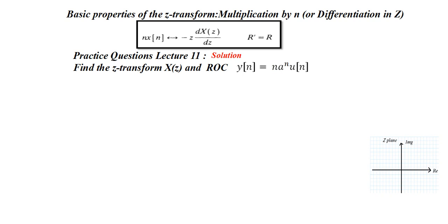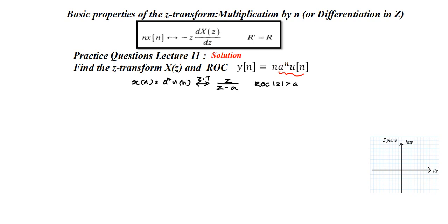The first question: y(n) = n · aⁿ · u(n). We can approach this by taking the part aⁿ · u(n) and considering it as the signal x(n). So x(n) = aⁿ · u(n), and the Z-transform of this signal is z/(z - a), with ROC: |z| > |a|, because it is a causal signal. The new signal is a product of x(n) and n.